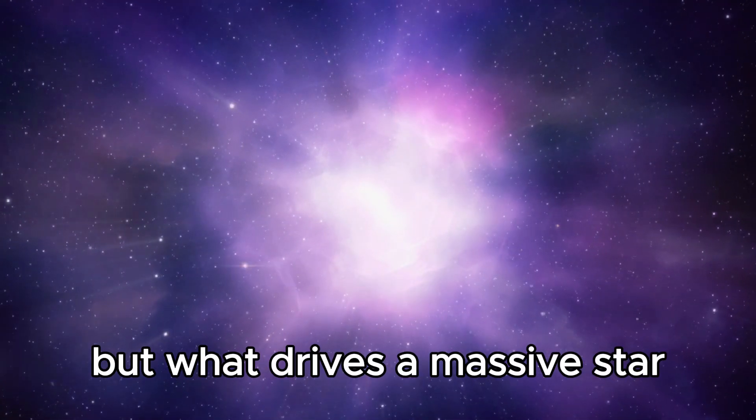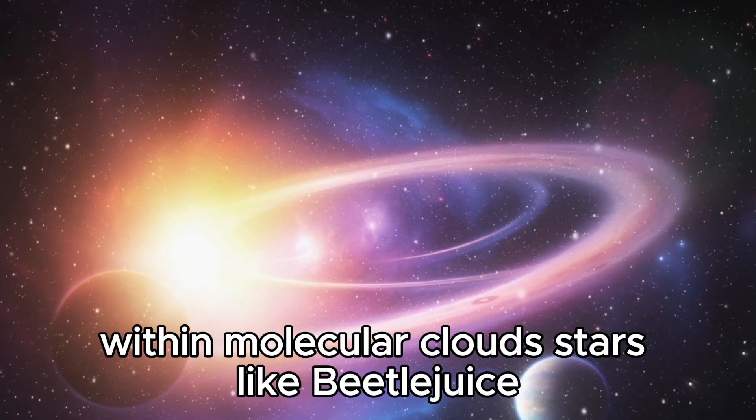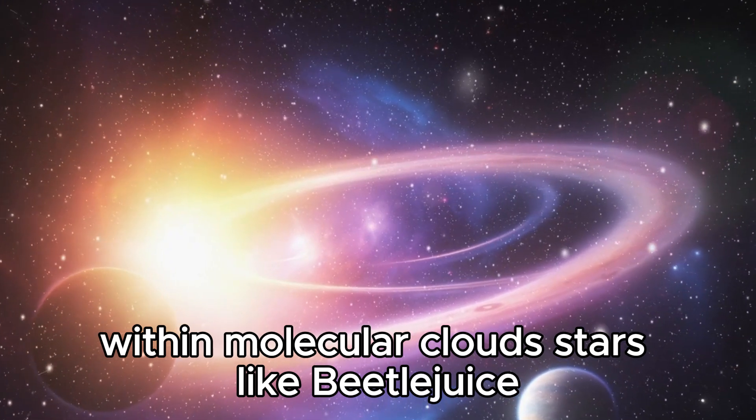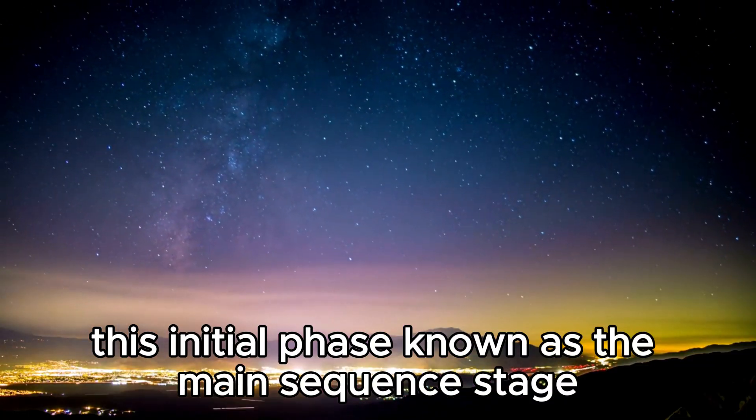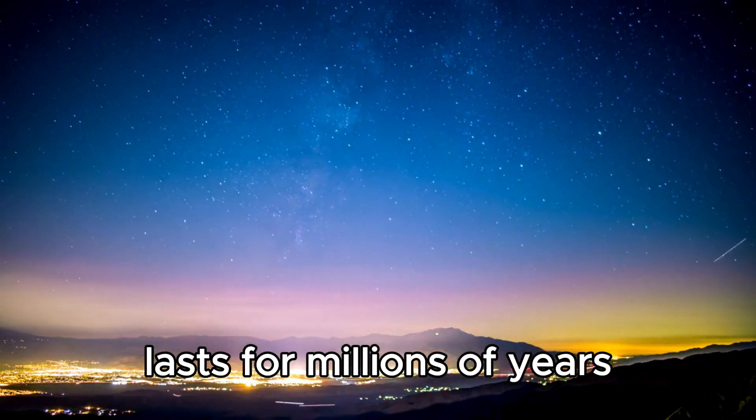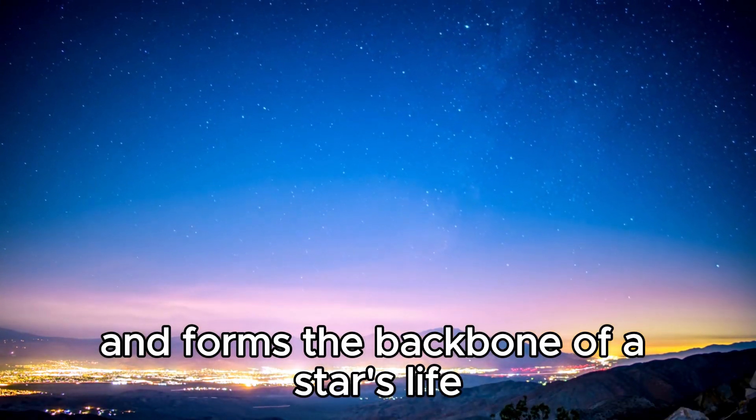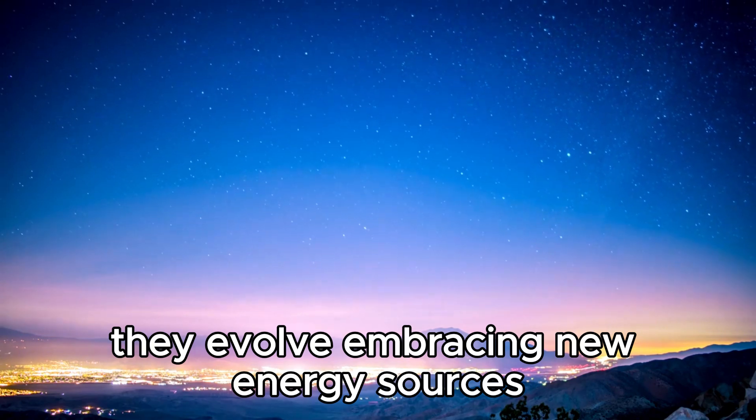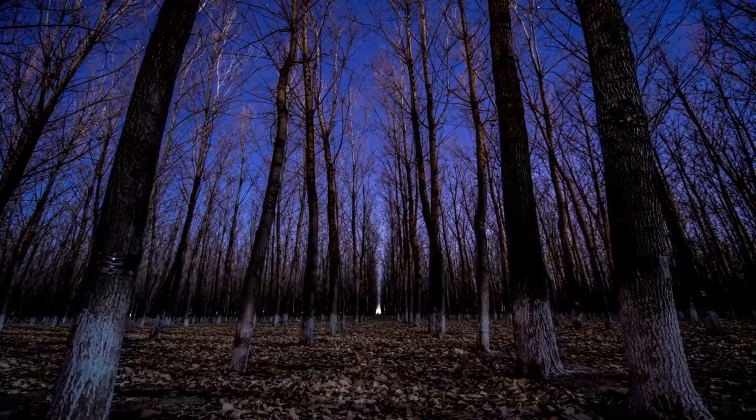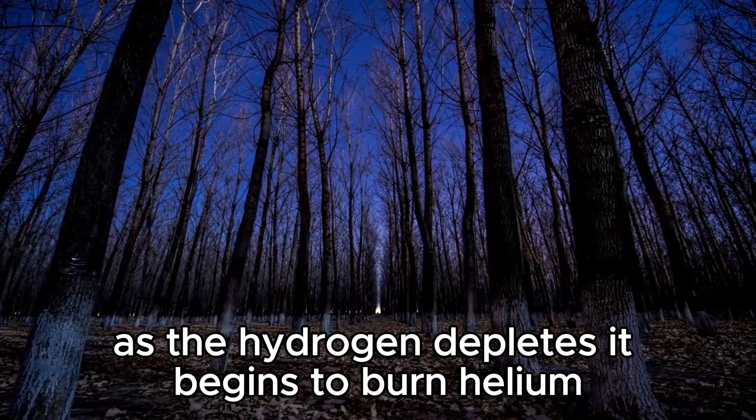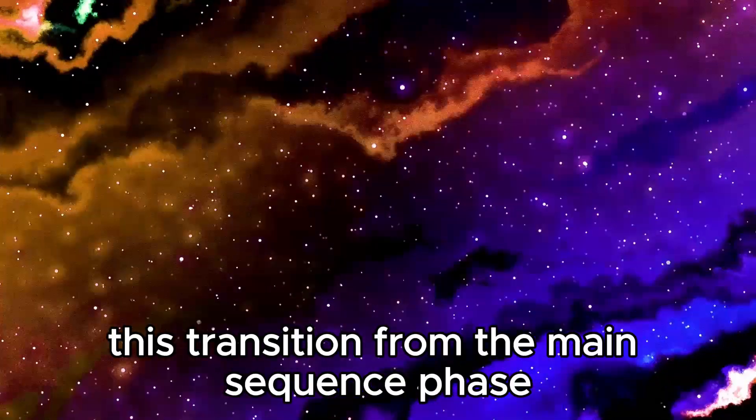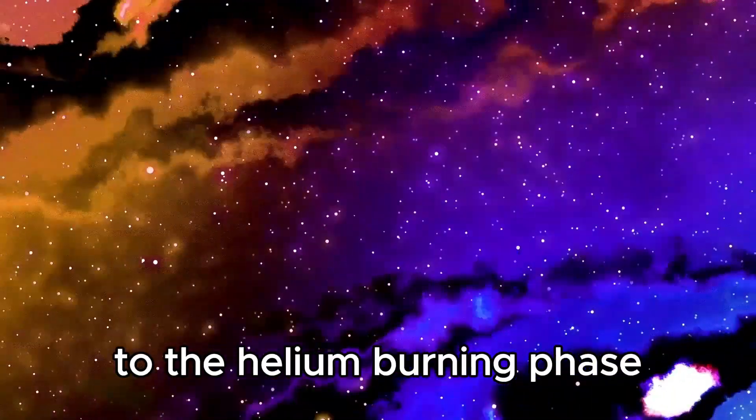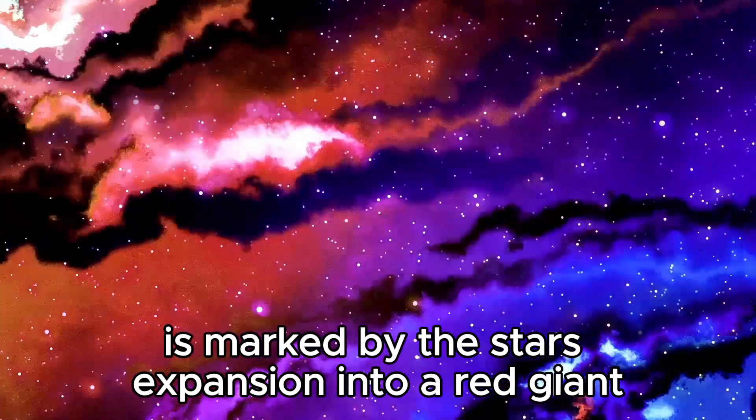But what drives a massive star like Betelgeuse to its demise? Born from the gravitational collapse of gas within molecular clouds, stars like Betelgeuse kickstart their journey by burning hydrogen in their cores. This initial phase, known as the main sequence stage, lasts for millions of years and forms the backbone of a star's life. But as stars run low on hydrogen, they evolve, embracing new energy sources. In the case of Betelgeuse, as the hydrogen depletes, it begins to burn helium, leading to the formation of carbon and oxygen. This transition from the main sequence phase to the helium burning phase is marked by the star's expansion into a red giant.